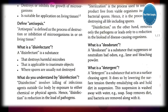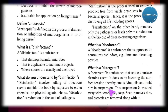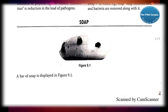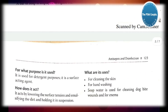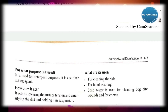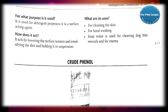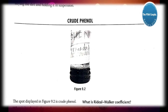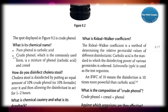What is a detergent? It is a substance that acts as a surface cleaning agent by lowering the surface tension, thereby emulsifying oils and holding dirt in suspension. The first spot is soap. It is used for detergent purposes — a surface acting agent. It acts by lowering surface tension and emulsifying dirt. Uses include cleaning the skin, hand washing, cleaning dog bite wounds, and for enema.